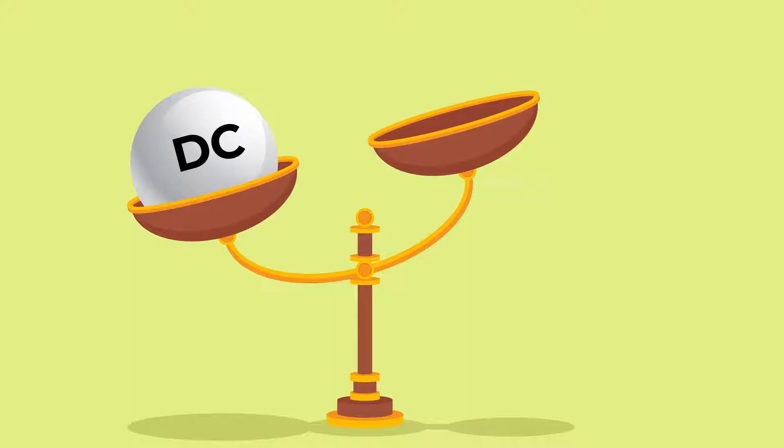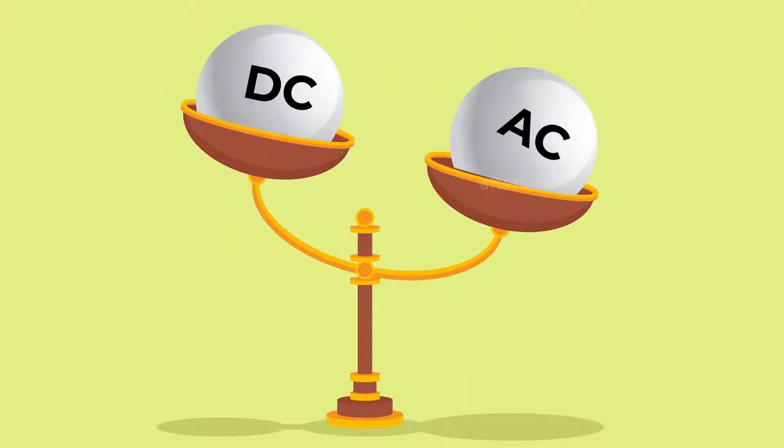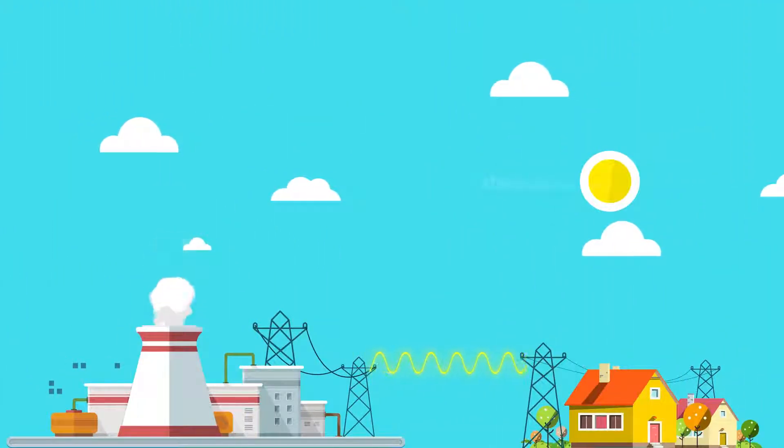A comparison exists for everything, and here, for direct current, it is alternating current. The currents that are distributed to our homes from power stations are alternating currents.